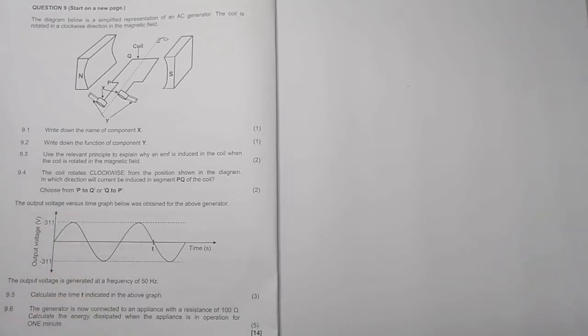The next question - they say the coil rotates clockwise from the position shown in the diagram. In which direction will current be induced in segment PQ of the coil? Now for those of you who have not really seen me explain this, please just go back to our full video on electrodynamics. It will really assist you in understanding this section.